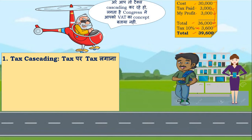Tax cascading was a problem, and to solve it, a system called VAT was introduced. VAT stands for Value Added Tax — it has two parts: value addition by someone, and tax. The VAT system only taxes the value addition at each stage. In our example, the retailer added value of 3,000, so under VAT, tax should only be charged on that 3,000.